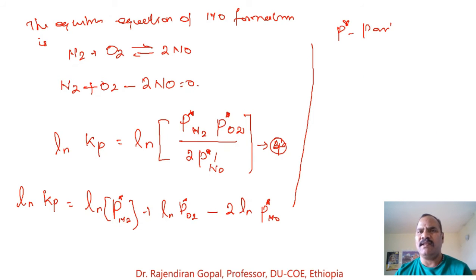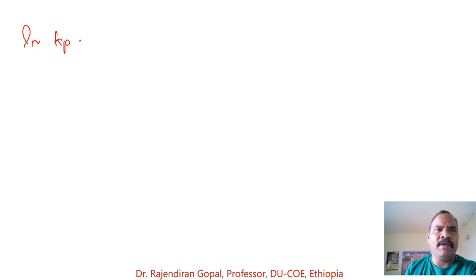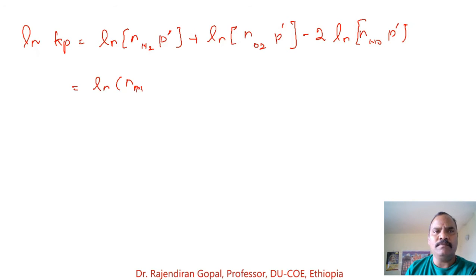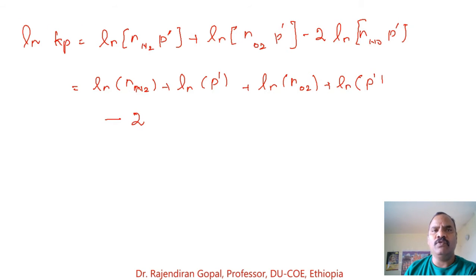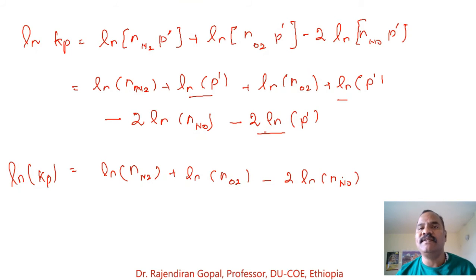The partial pressure P* of species i equals nᵢ × P / Σnᵢ. Defining P′ = P / Σnᵢ, the equilibrium expression becomes: ln Kp = ln(n_N2 × P′) + ln(n_O2 × P′) − 2 ln(n_NO × P′). After simplification, this reduces to: ln Kp = ln(n_N2) + ln(n_O2) − 2 ln(n_NO) + (1 + 1 − 2) ln(P′), and since the pressure terms cancel (Δn = 0), we get ln Kp = ln(n_N2) + ln(n_O2) − 2 ln(n_NO).